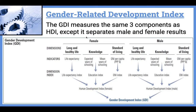There are two indices commonly used to measure the level of gender equality in a country. One is called the Gender-Related Development Index. All this is doing is taking the Human Development Index, or HDI, and splitting it between males and females in a country. So it uses the same three components — life expectancy, years of schooling, and gross national income per capita — and then splits those components between males and females.